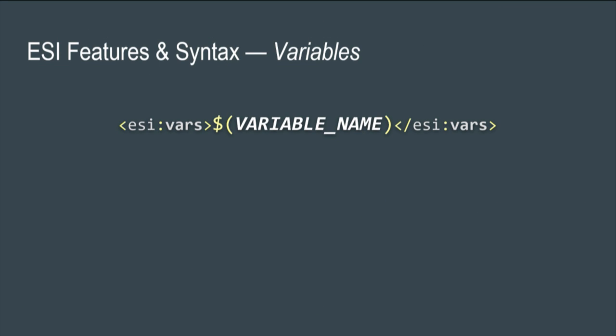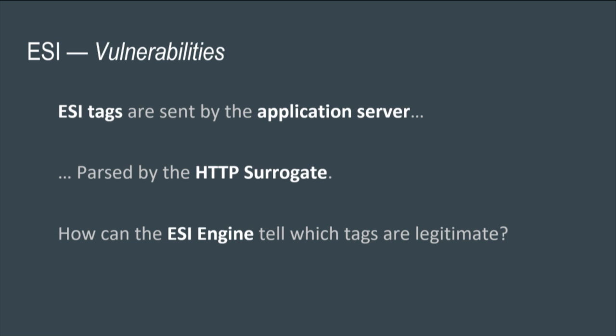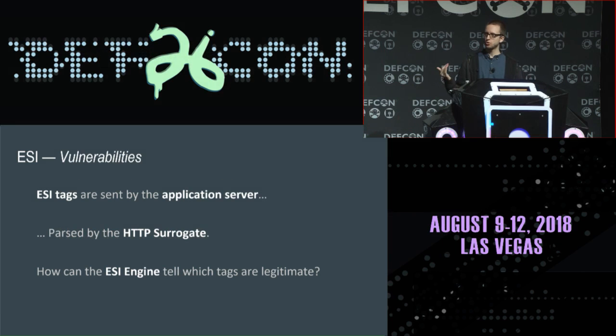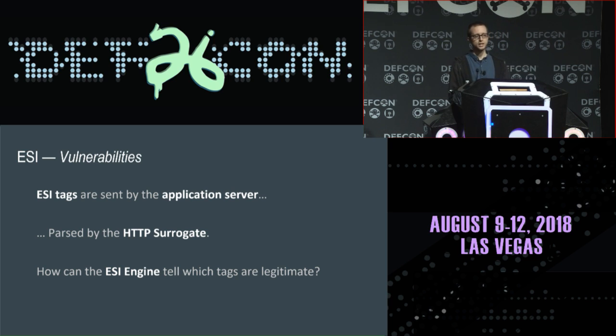The second feature is ESI variables. It's a simple feature with no XML attributes — the content of the tags gets expanded to access metadata about the current HTTP transaction, such as the HTTP user agent, cookies, query strings, basically anything relating to the current HTTP transaction. The important question we have to ask is: how can the ESI engine know which tags are legitimate versus injected by a malicious user?